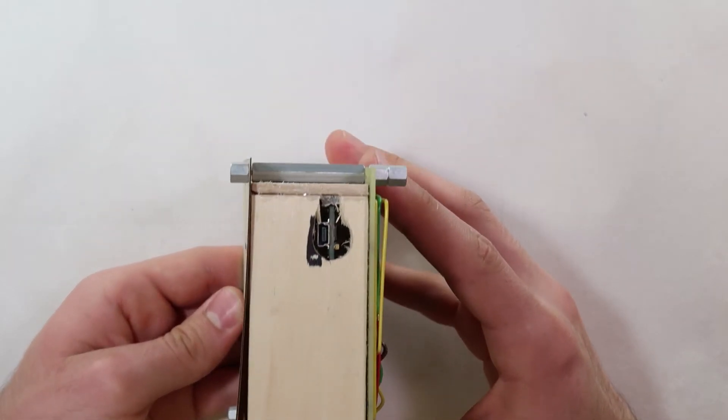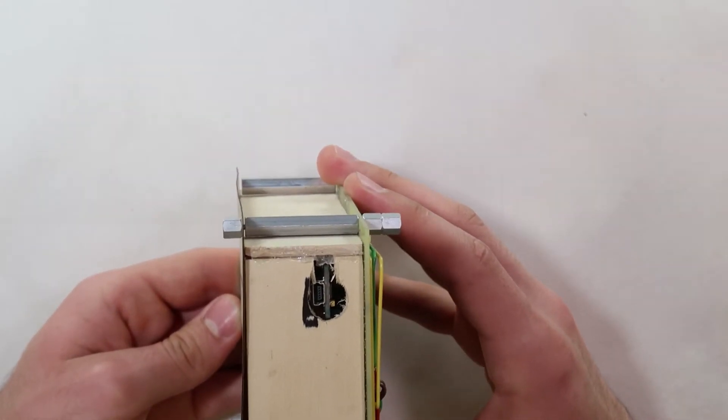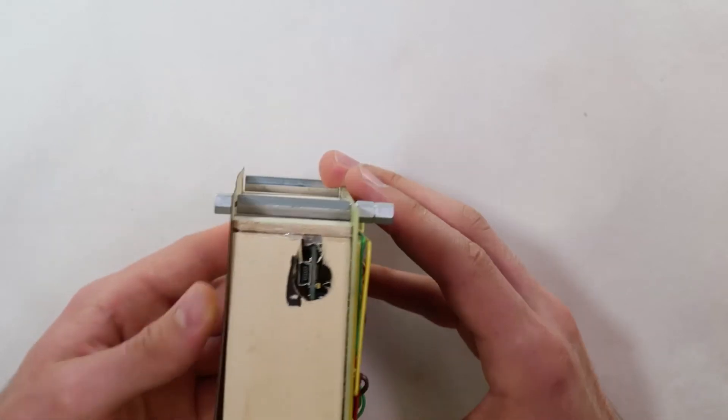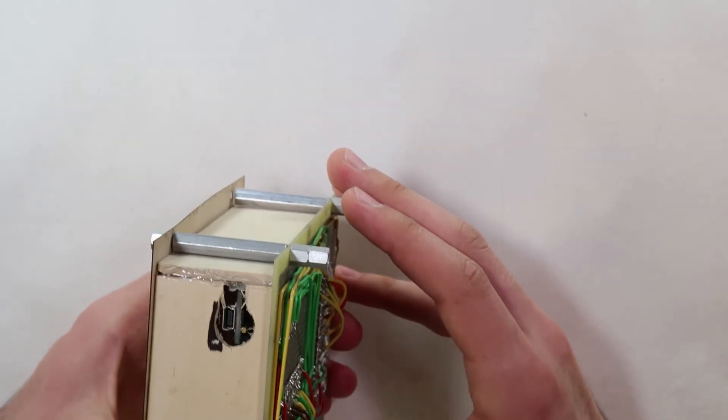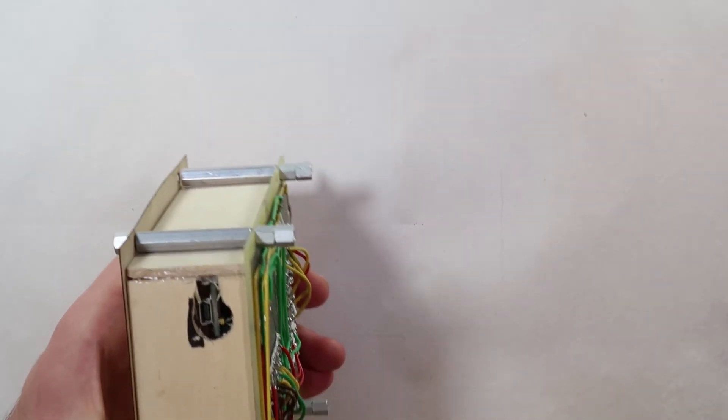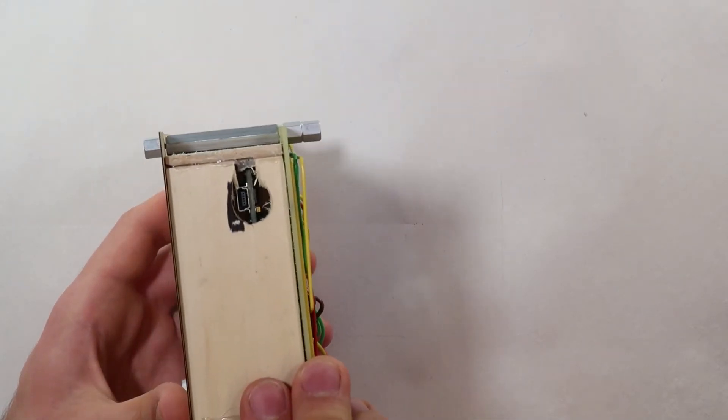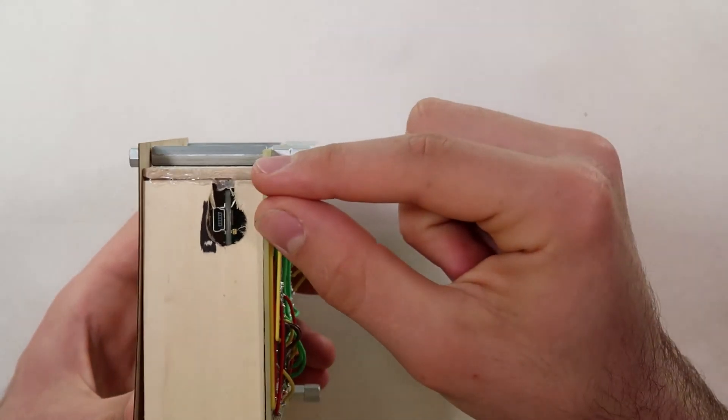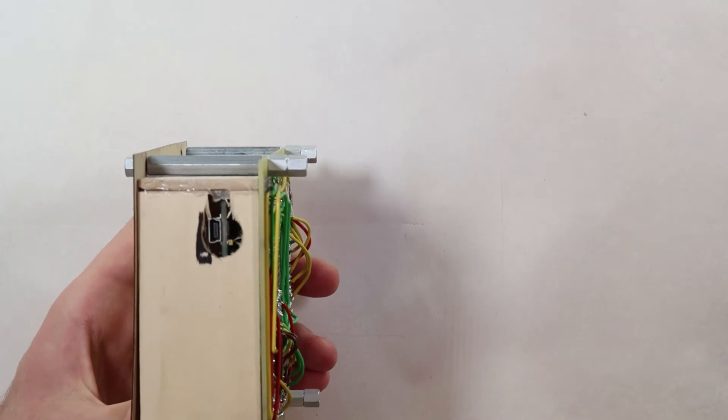Also on the side we made a little hole so that we can access the USB port on the Arduino Nano. You want to make this hole as small as possible to make sure no sunlight is let in. If there's a little too much space you can always put the cord in and then tape around it so that no sunlight gets in at all.